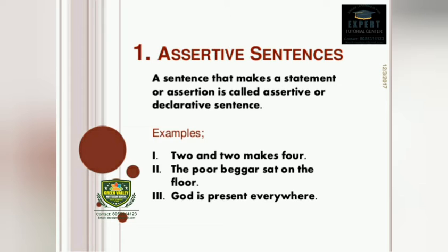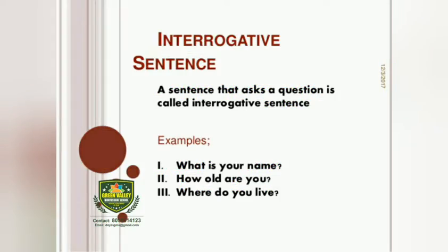The first type is the assertive sentence. A sentence that makes a statement or assertion is called an assertive or declarative sentence. Examples: two and two makes four. The poor beggar sat on the floor. God is present everywhere. All these examples are of assertive sentences.